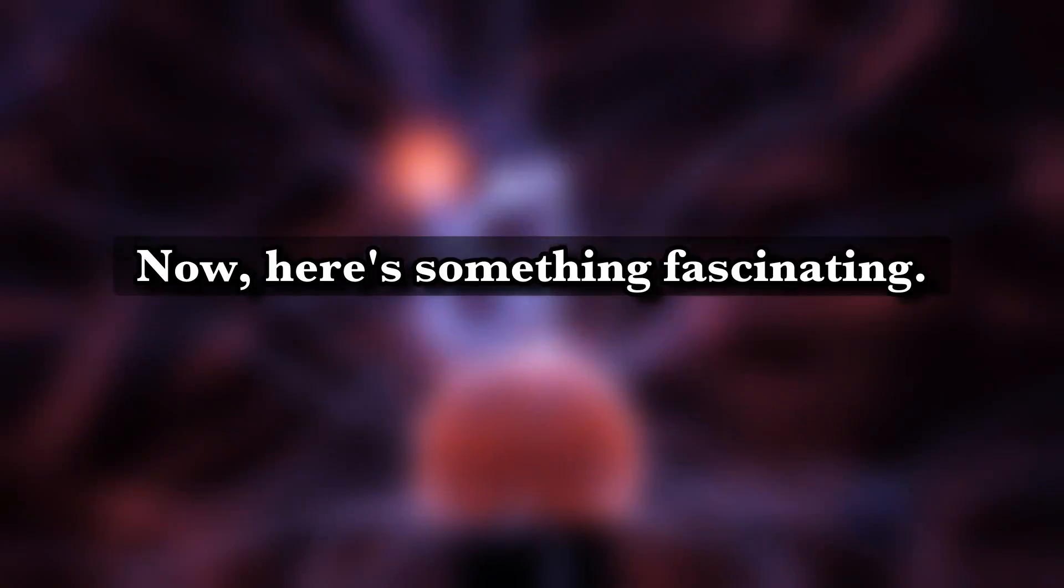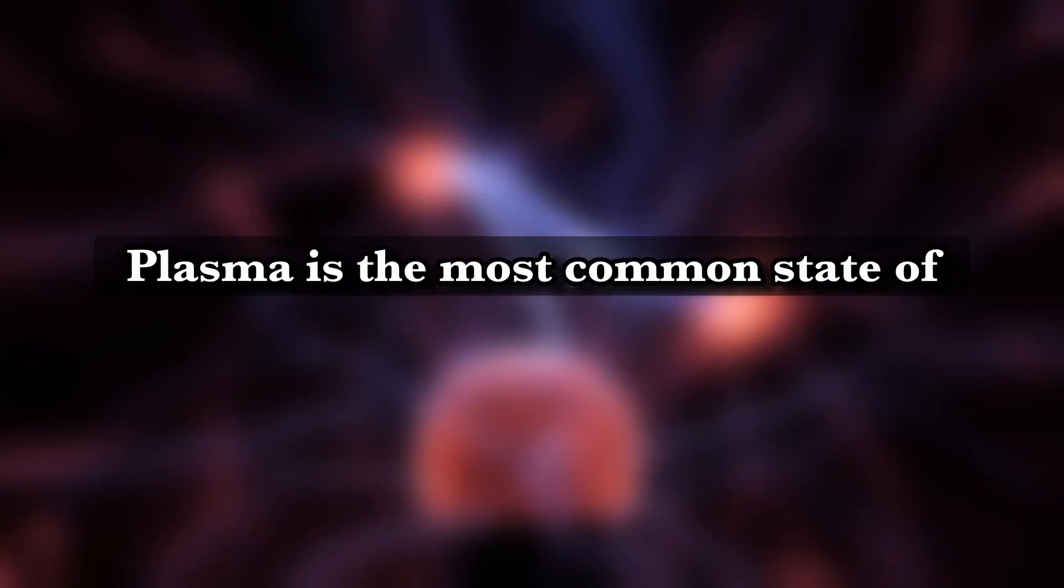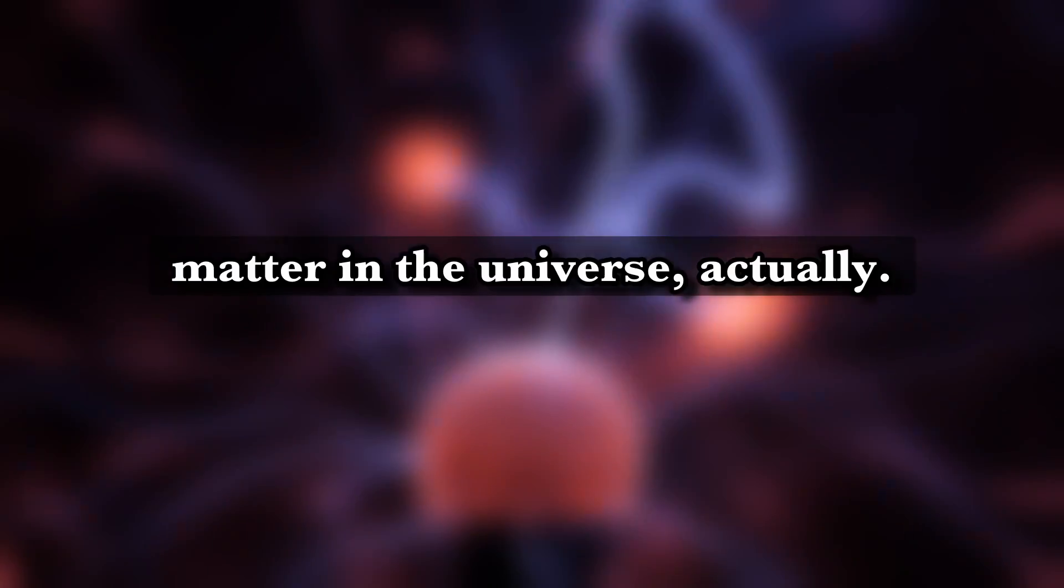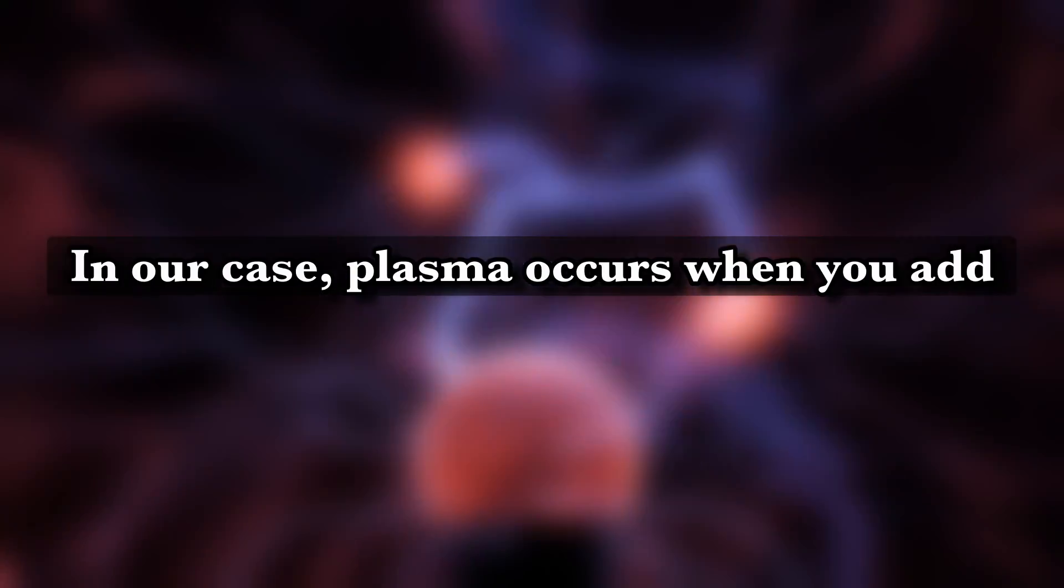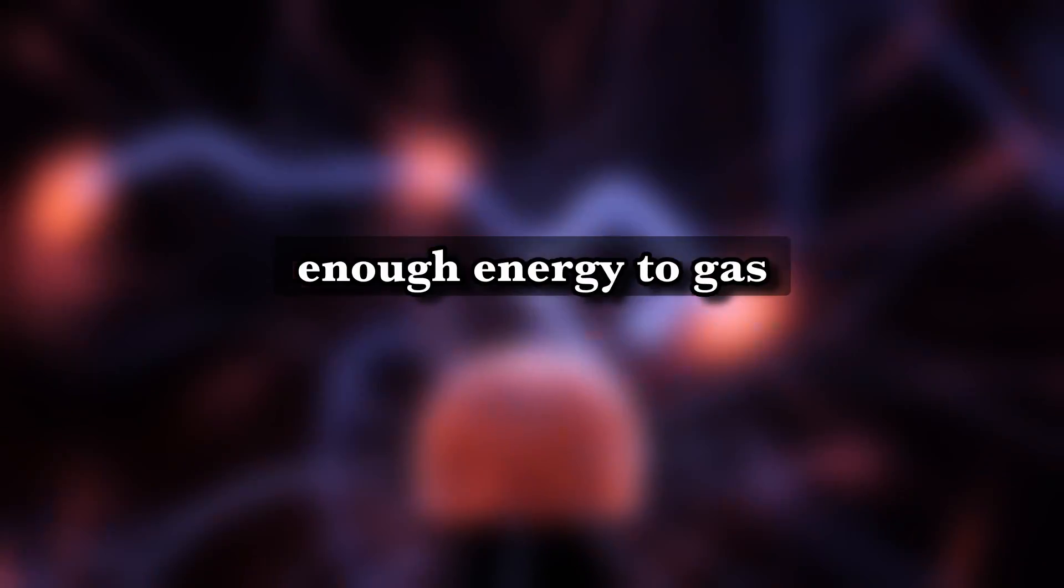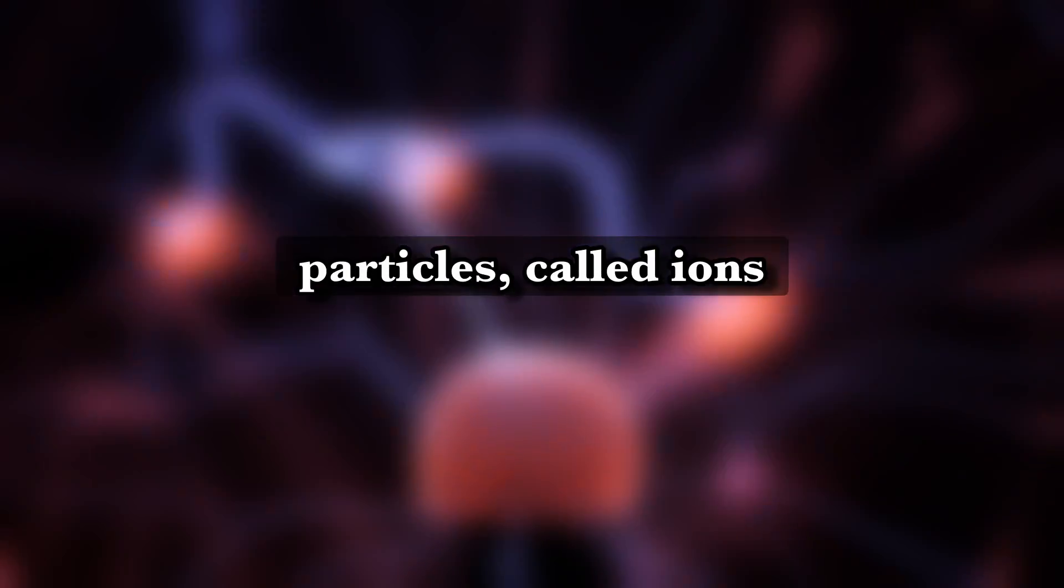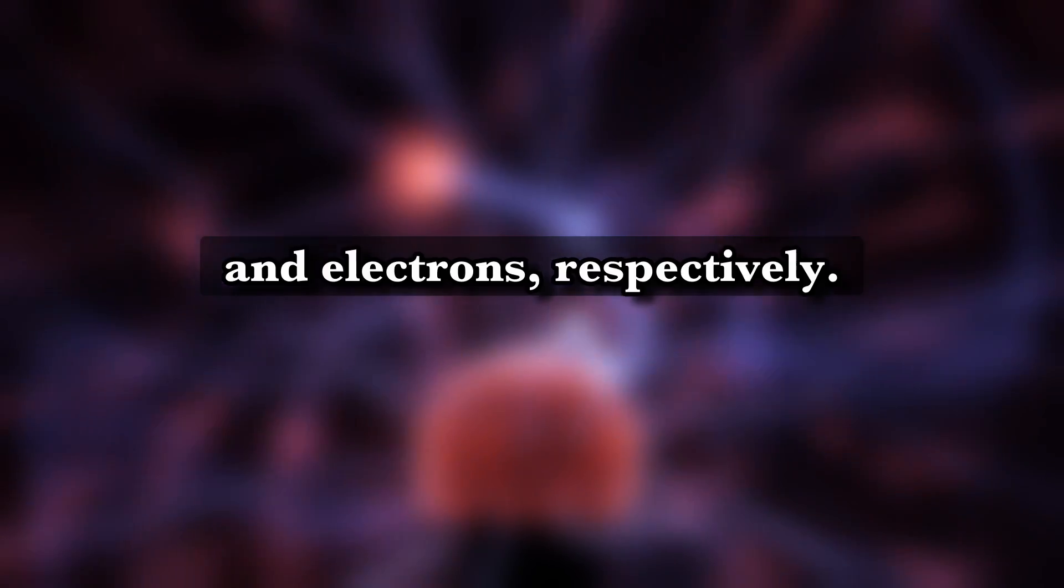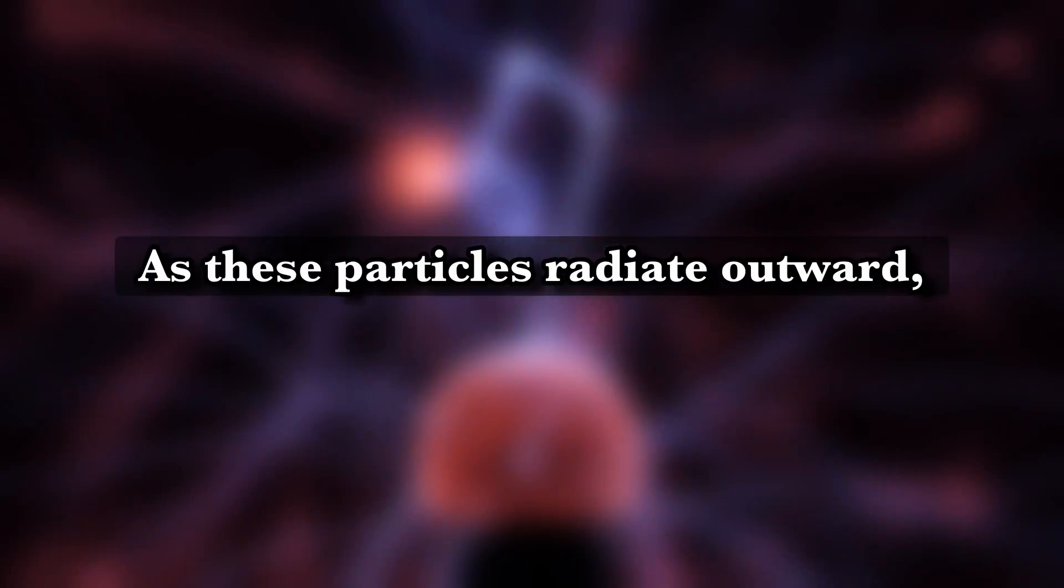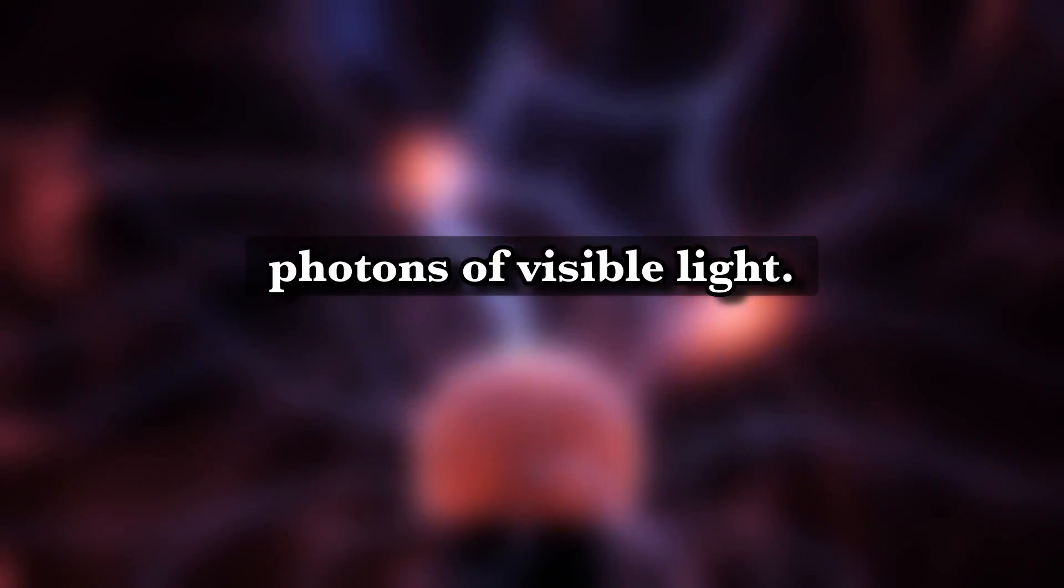Now, here's something fascinating. Plasma is the most common state of matter in the universe, actually. In our case, plasma occurs when you add enough energy to gas that it superheats. In this case, that energy is electricity. In this state, it becomes a sea of positively and negatively charged particles, called ions and electrons, respectively. As these particles radiate outward, they release the energy and revert back to a lower charged state. As their energy falls back down to normal, they emit photons of visible light.